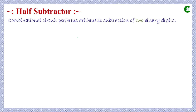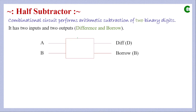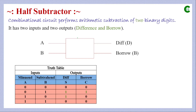A half subtractor is a combinational circuit that performs arithmetic subtraction of two binary digits. It has two inputs and two outputs: difference (D) and borrow (B). This is the block diagrammatic representation of a half subtractor with inputs A and B, and this is its truth table.